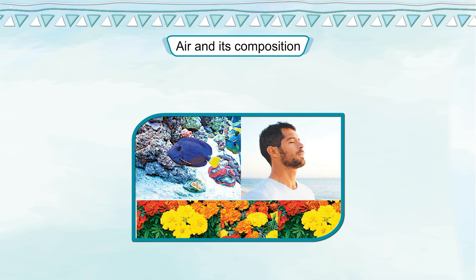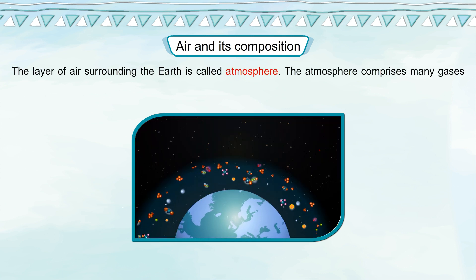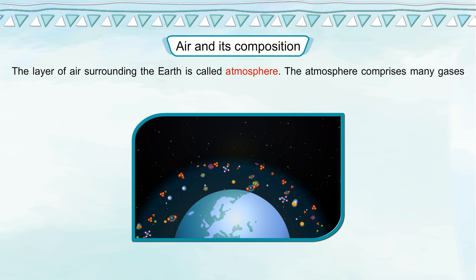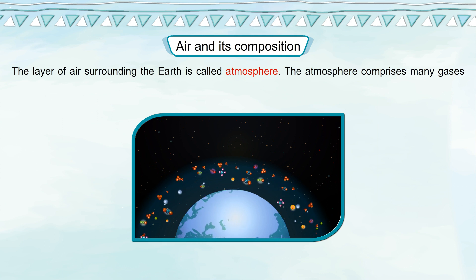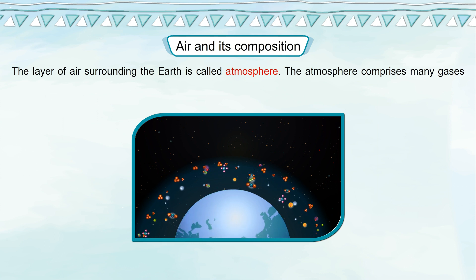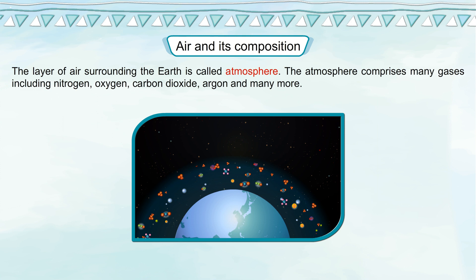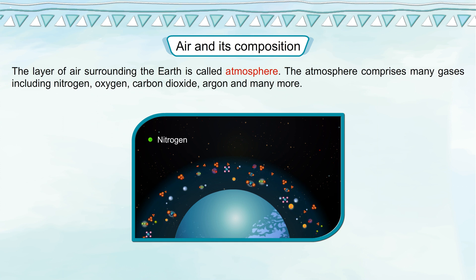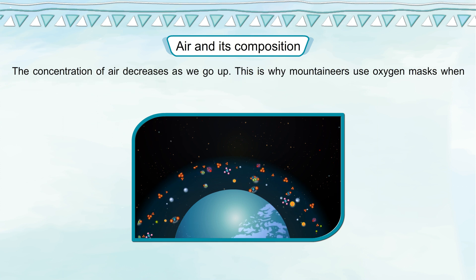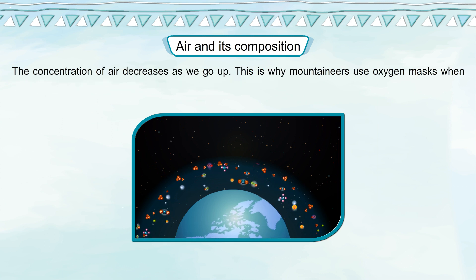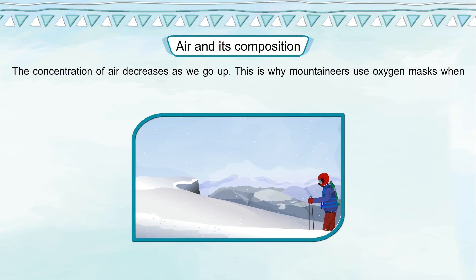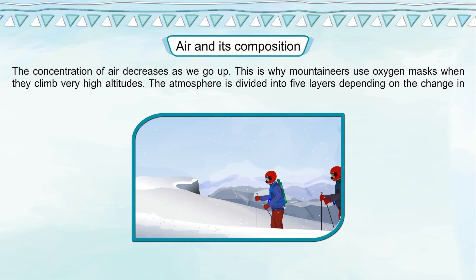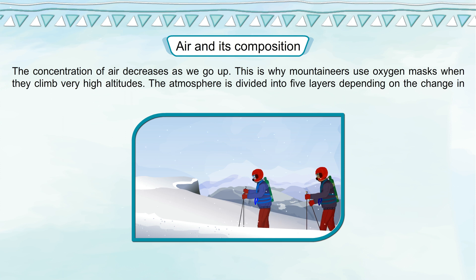Air and its composition. The layer of air surrounding the earth is called the atmosphere. The atmosphere comprises many gases including nitrogen, oxygen, carbon dioxide, argon and many more. The concentration of air decreases as we go up.